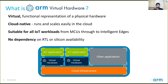Thanks Nathan. ARM Virtual Hardware provides a functional, accurate representation of physical hardware — such as an ARM-based SoC or development board — and runs in the cloud. This allows integration with modern cloud-based workloads like CI/CD systems. It's suitable for all IoT workloads from microcontroller to intelligent edge endpoints. There's no dependency on RTL or silicon availability, so you can start developing your IoT application in cloud-native style. ARM Virtual Hardware currently has two offerings: Corstone and Cortex ARM-based processors available in AWS, and third-party hardware, which we'll be covering today.